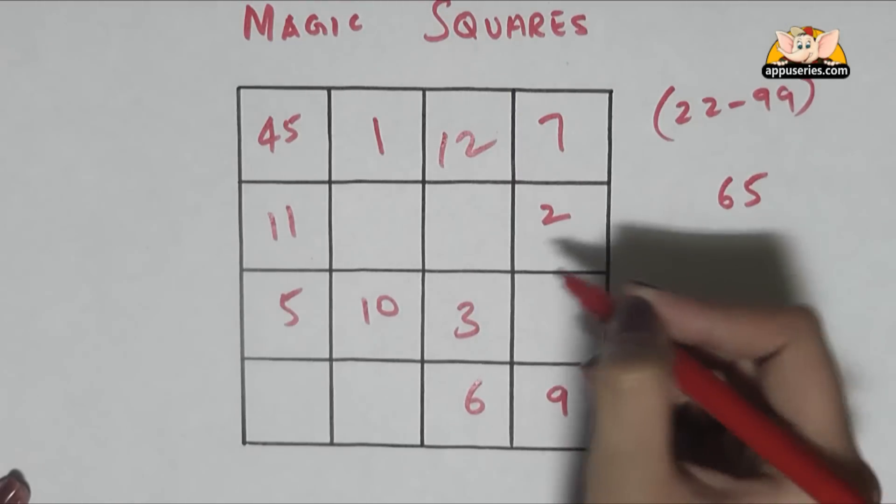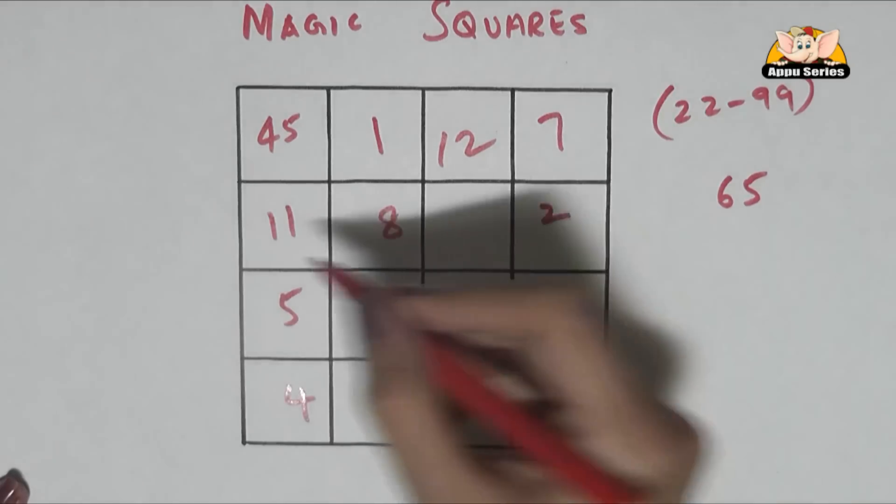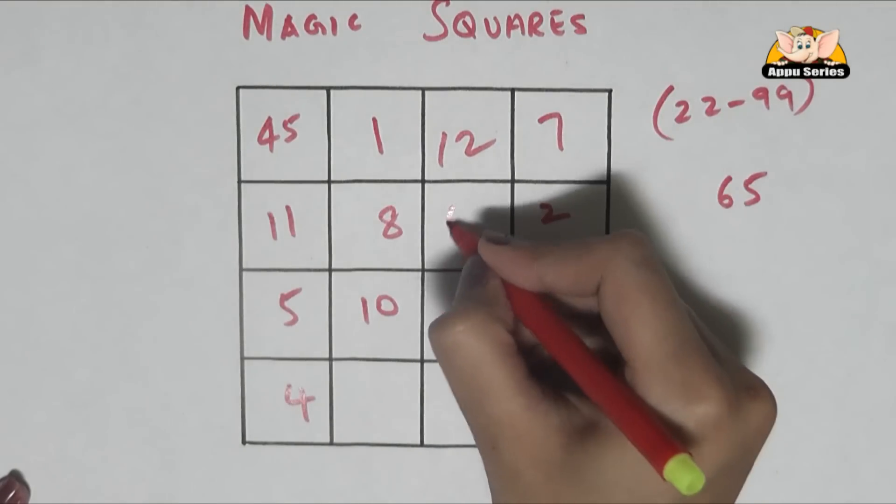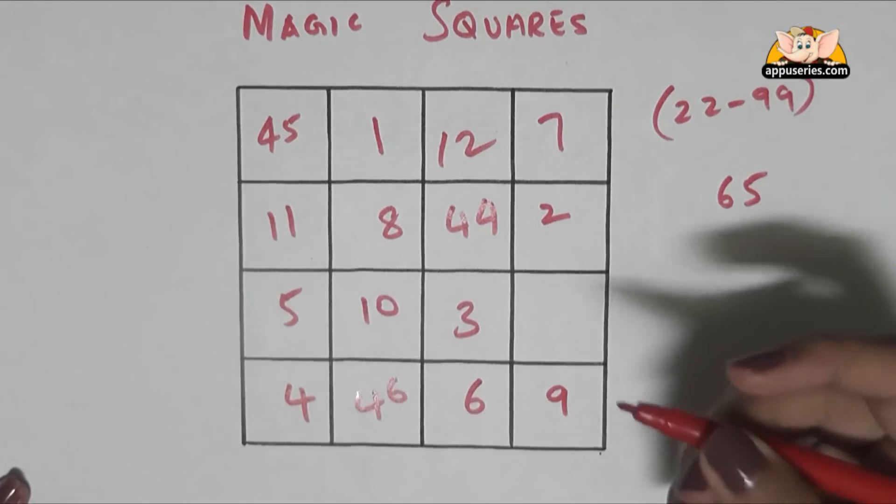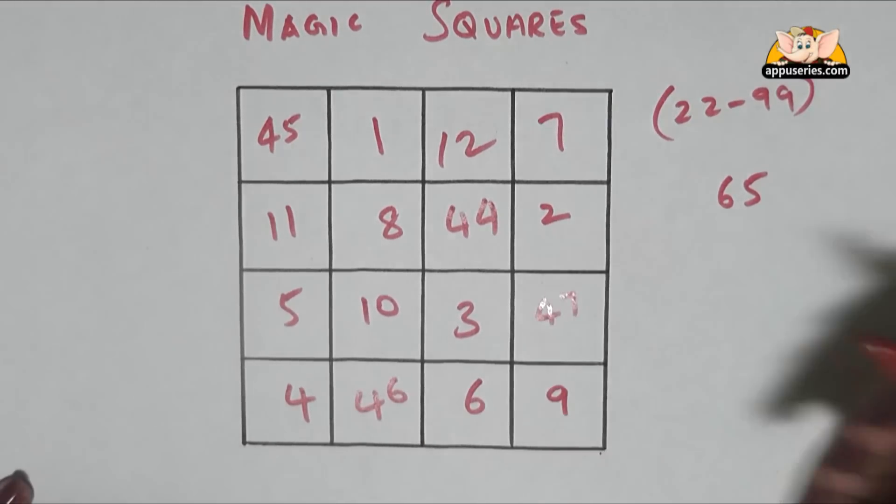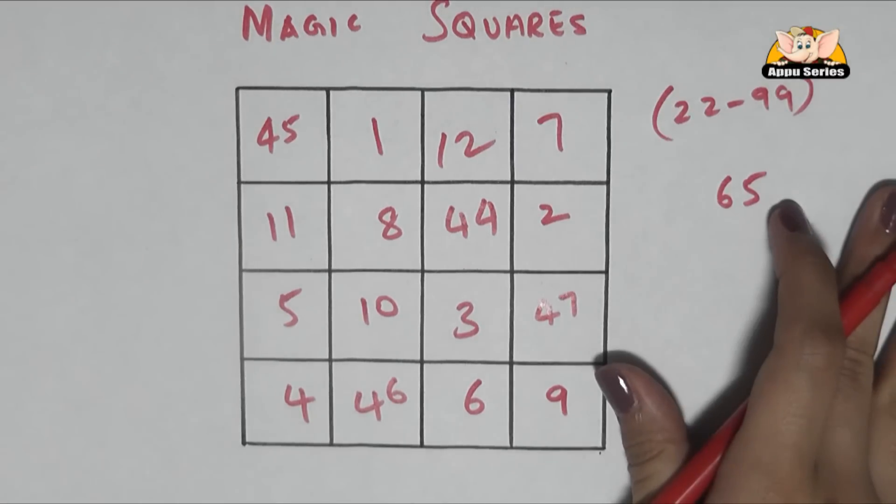And then we have 44 here, then 46 here, and then 47 here. Now once I've done this, calculate.